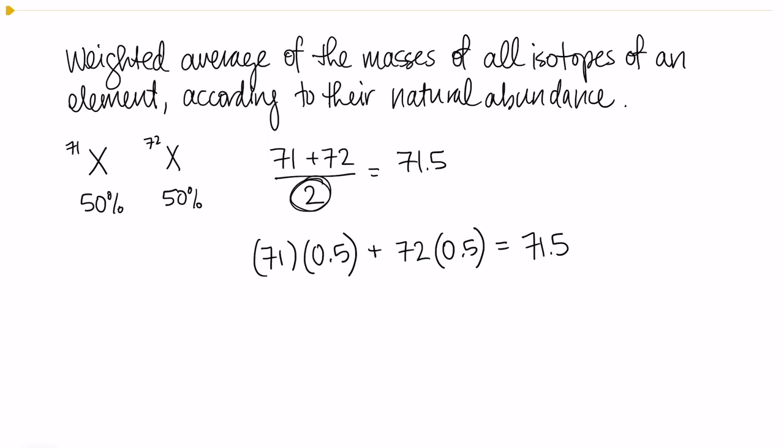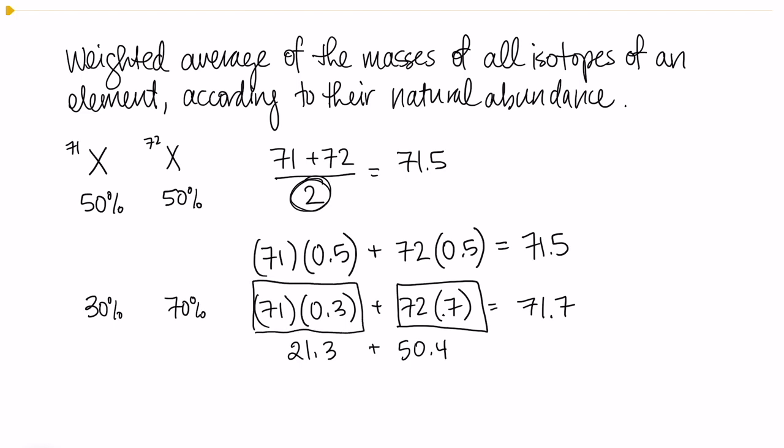Now, what if instead of this being 50% and 50%, we have 30% and 70%? We're going to do the math the same way, except instead of 50%, I'm going to plug in 30% and 70%. So 71 times 0.3 gives me 21.3 and 72 times 0.7 gives me 50.4. When I'm done, I get 71.7. We should notice we had more of this isotope that had a mass of 72 than we did of the mass 71 isotope, and therefore when we take the average and it's weighted by how much we have, we expect our answer to be closer to 72 than 71.